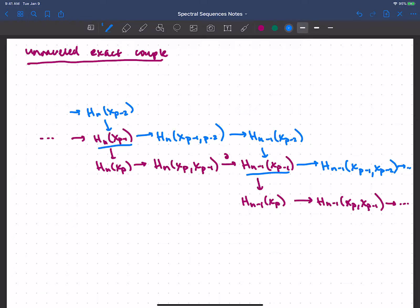And of course that continues. And we could continue backwards, continue this stair step. Let's do another layer here. So HN XP also maps to HN XP plus 1, and then there's the map to the relative. And then that continues to HN minus 1 of XP plus 1, and so on. You could see I could be writing this forever, so at some point I will stop. But the upshot here is that we have all of these long exact sequences sewn together. And that's exactly what the unraveled exact couple is.